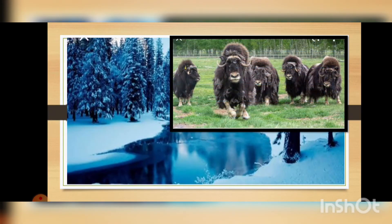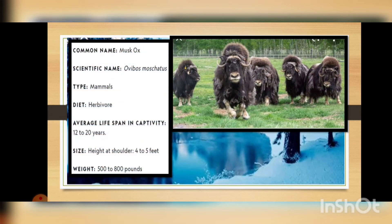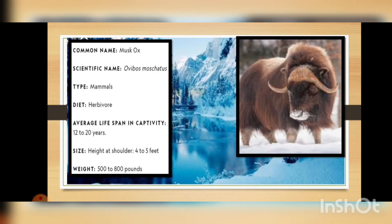Next we are moving to another animal — the musk ox. The scientific name of this animal is Ovibos moschatus. They are mammals and they are herbivores. The average lifespan in captivity is 12 to 20 years. Their size is four to five feet in height at the shoulder and they weigh almost 500 to 800 pounds. Here you can see another picture of a musk ox.